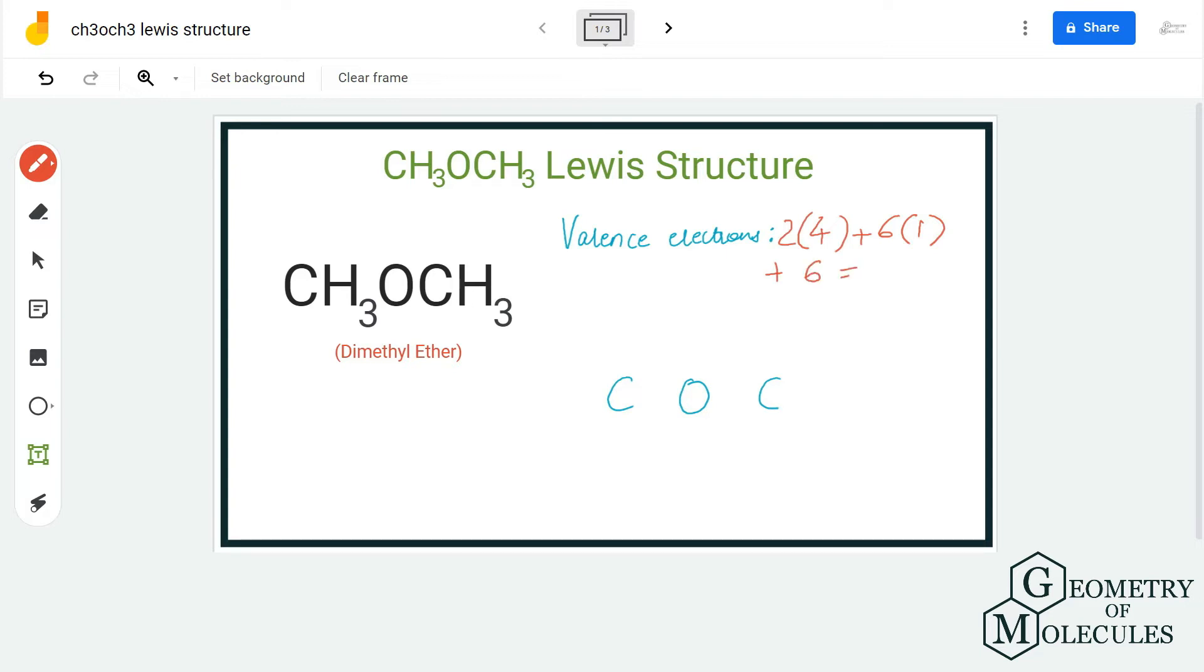In total we have 20 valence electrons for this molecule. For arrangement of the atoms, two carbon atoms will be here and in between them we will place oxygen atom. The rest of all the hydrogen atoms will go around the carbon atoms. As you can see, CH3OCH3 means CH3 and CH3 will be on the terminals and oxygen atom will be in the center.